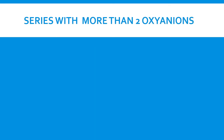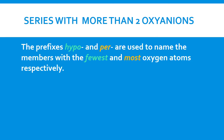What if we have a series with more than two oxyanions? We're going to use prefixes in front. We'll use the prefixes hypo and per — hypo meaning having the fewest oxygen atoms, and per meaning the most oxygen atoms.